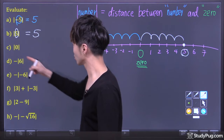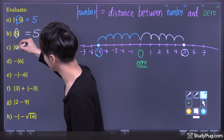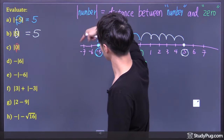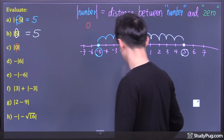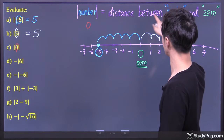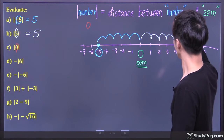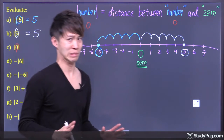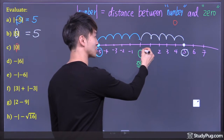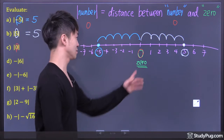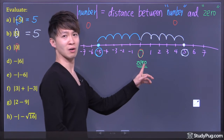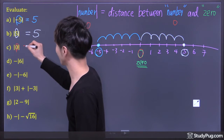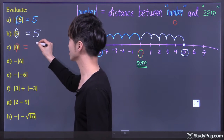Question C: inside the absolute value we now have 0. Absolute value of 0 is defined as the distance between the number 0 and 0. What is the distance between 0 and 0? There's no distance. So absolute value of 0 is 0.